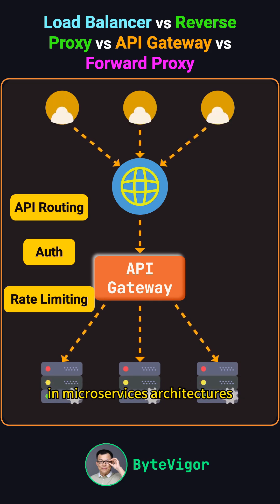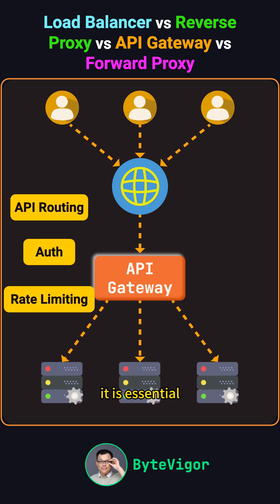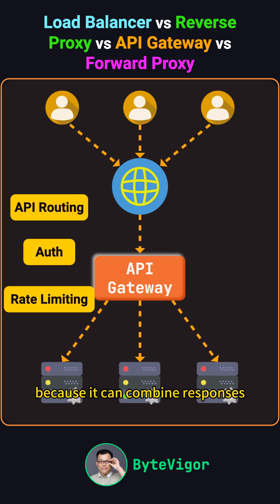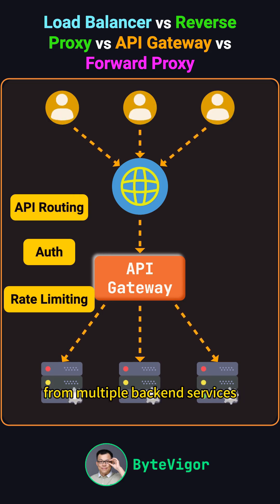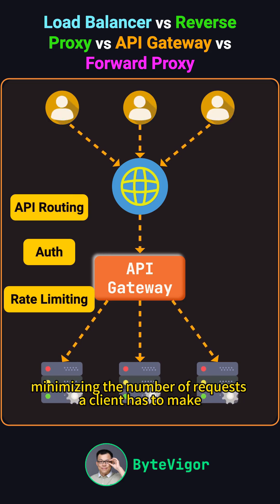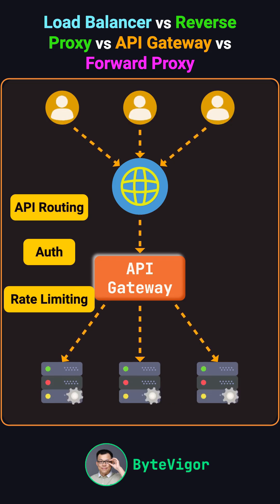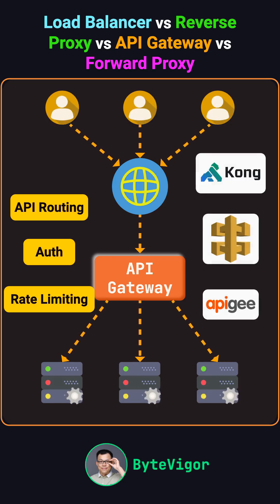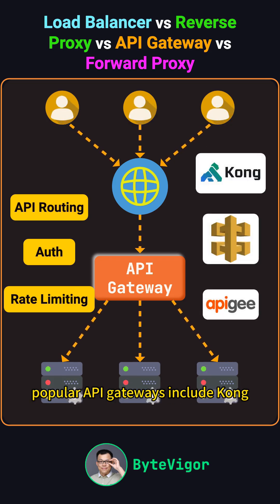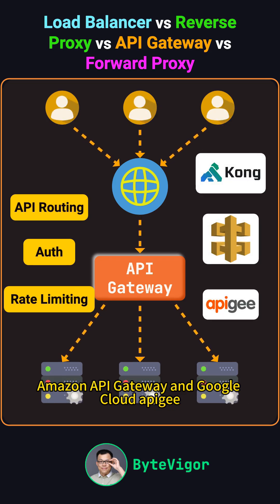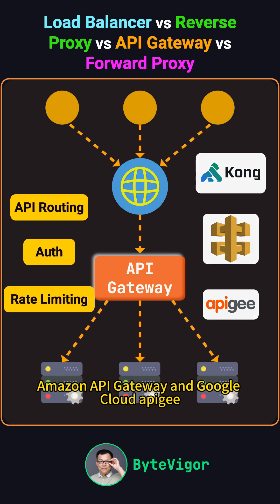In microservices architectures, it is essential because it can combine responses from multiple back-end services, minimizing the number of requests a client has to make. Popular API gateways include Kong, Amazon API Gateway, and Google Cloud Apigee.